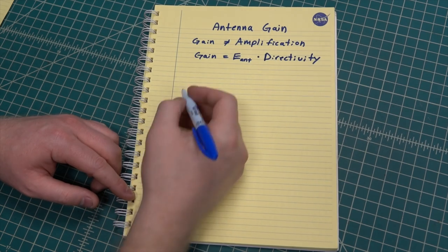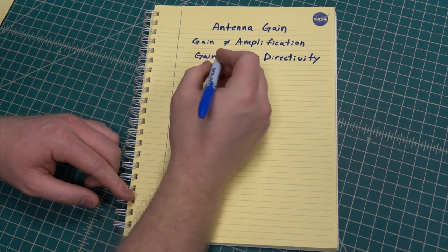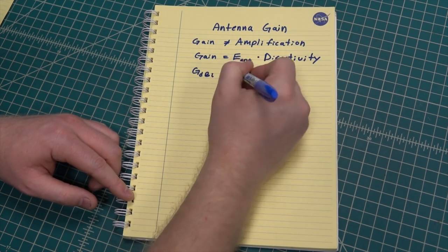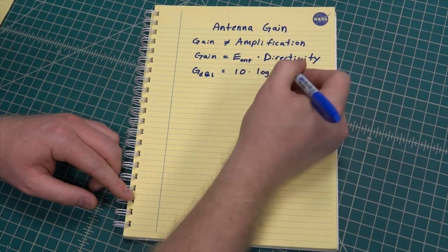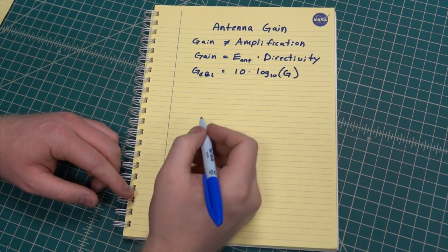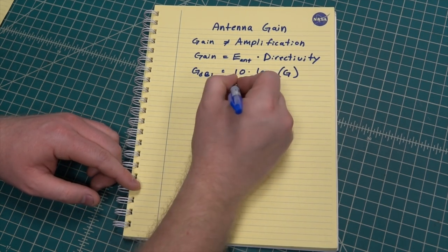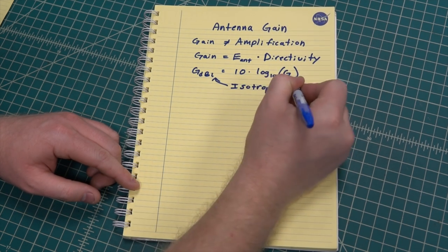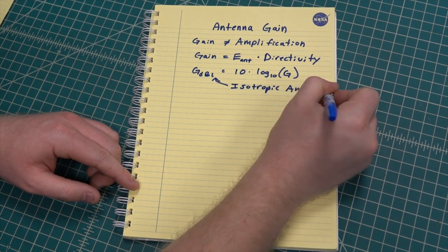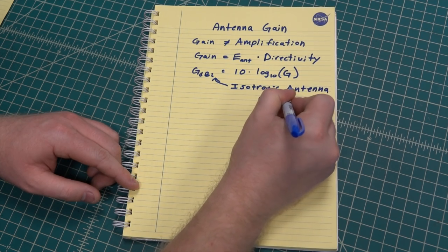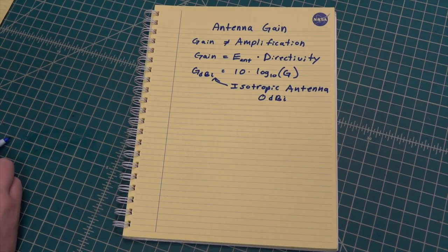Antenna gain is a product of the antenna efficiency and the directionality of the antenna. When looking at antenna specifications the gain is often listed as dBi and the i is referring to a hypothetical isotropic antenna that has a gain of 0 dBi which means that it radiates in all directions equally. If not specified the listed antenna gain is the max gain of the antenna.